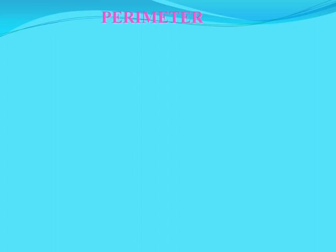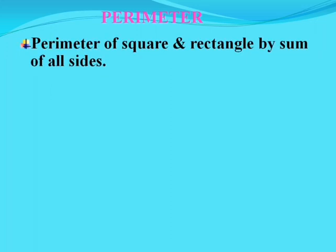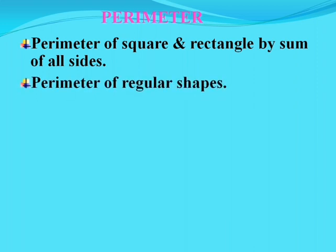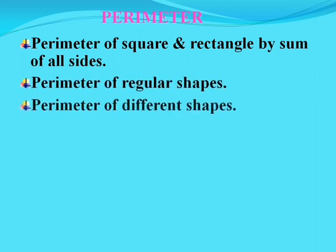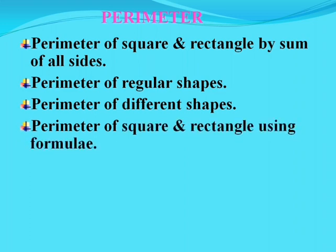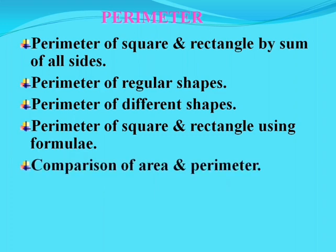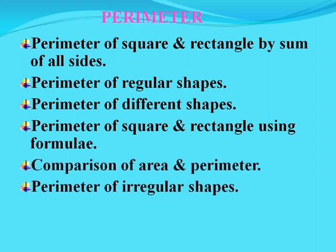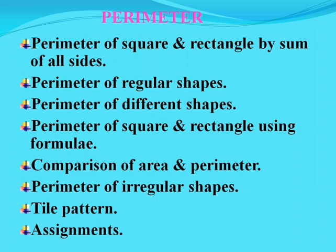So in this topic, we are going to discuss perimeter of square and rectangle by sum of all sides, perimeter of regular shapes, perimeter of different shapes, perimeter of square and rectangle using formulae, comparison of area and perimeter, perimeter of irregular shapes, tile pattern, and assignments to do. So children, let's move forward.